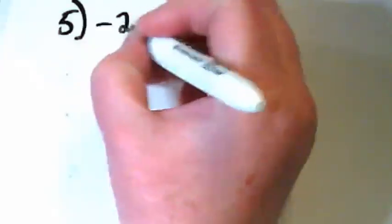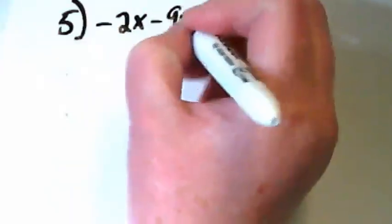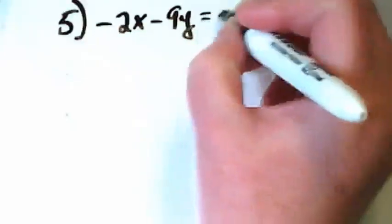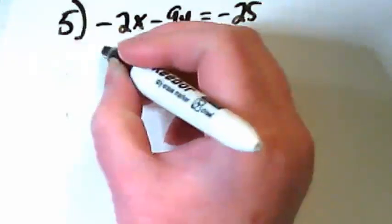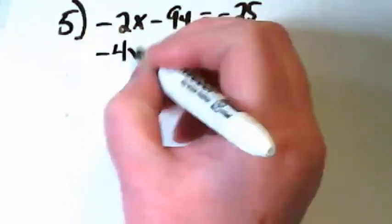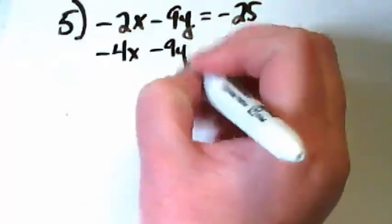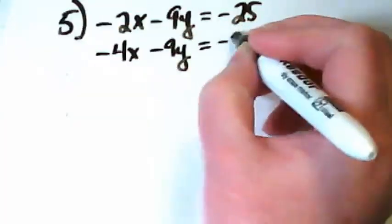Number 5 says negative 2x minus 9y equals negative 25, and then it says negative 4x minus 9y equals negative 23.